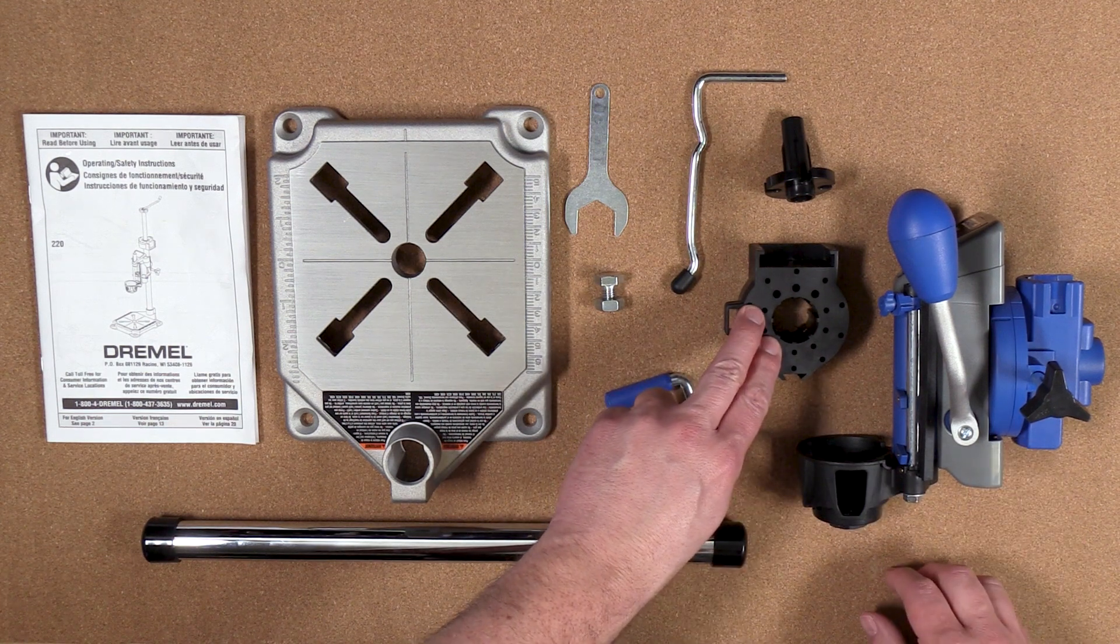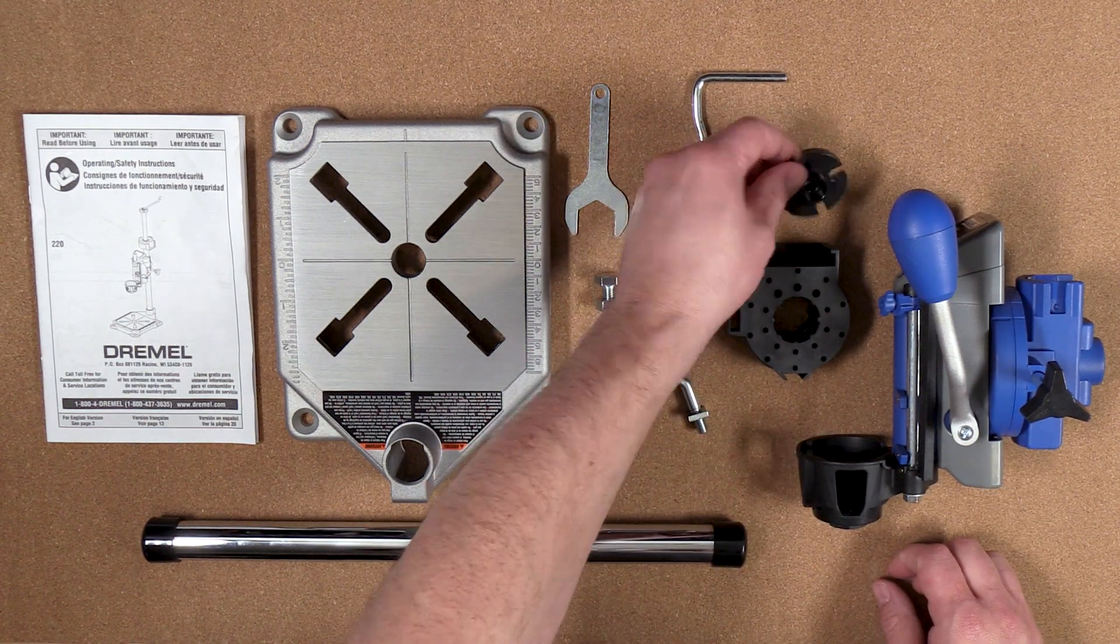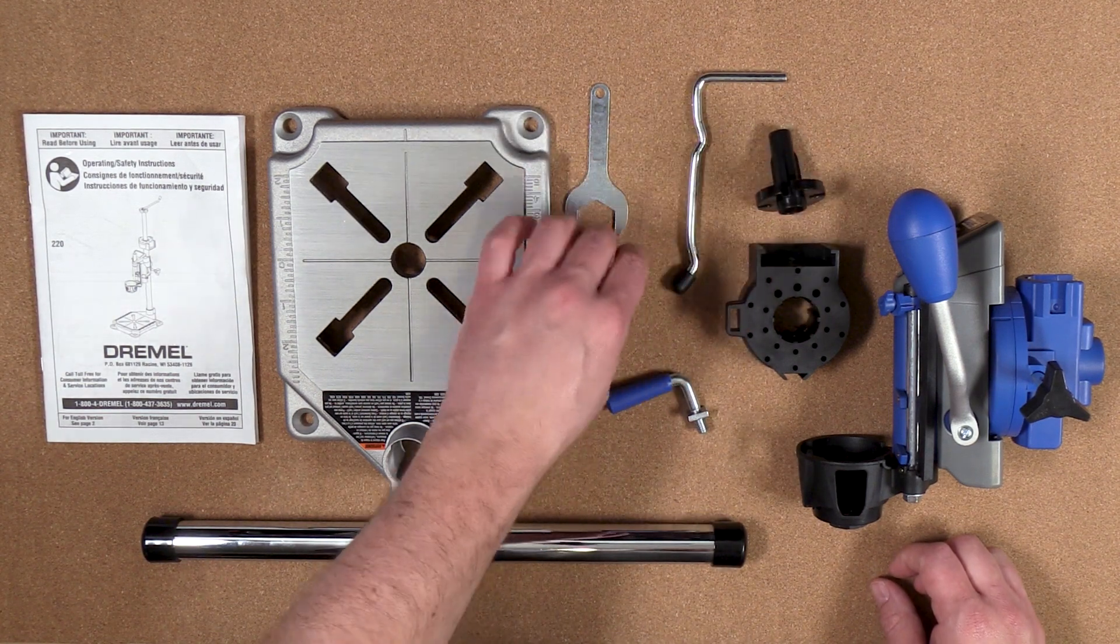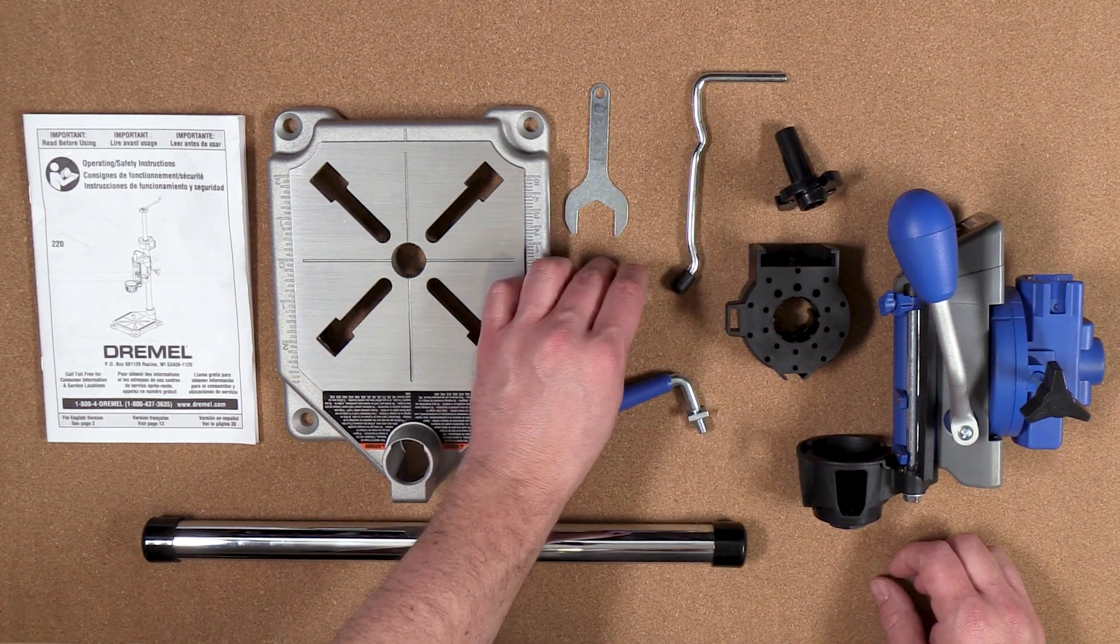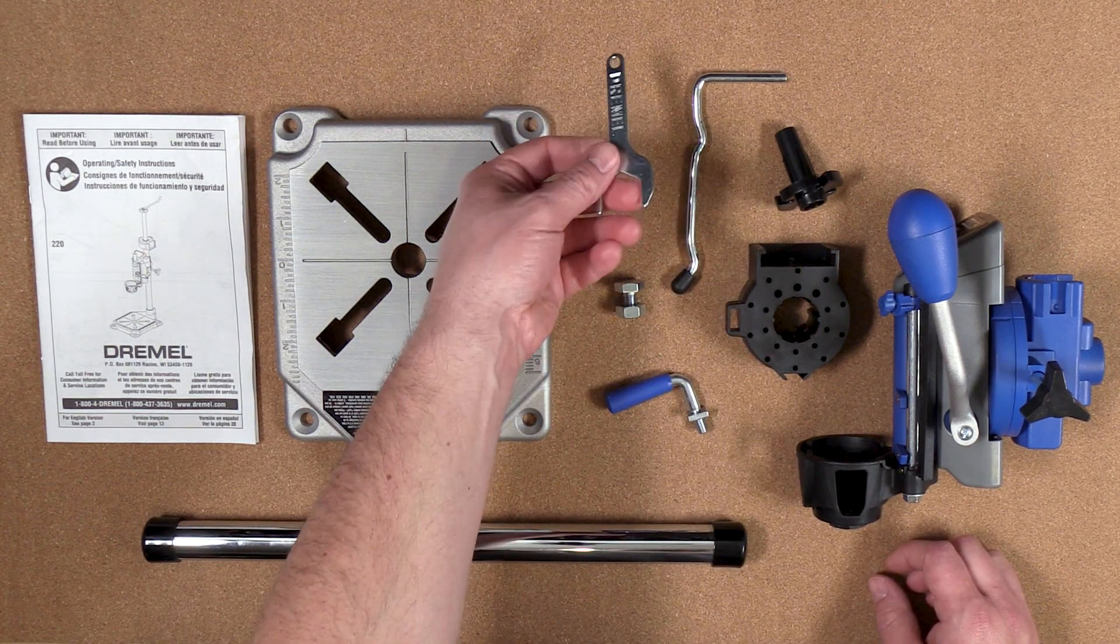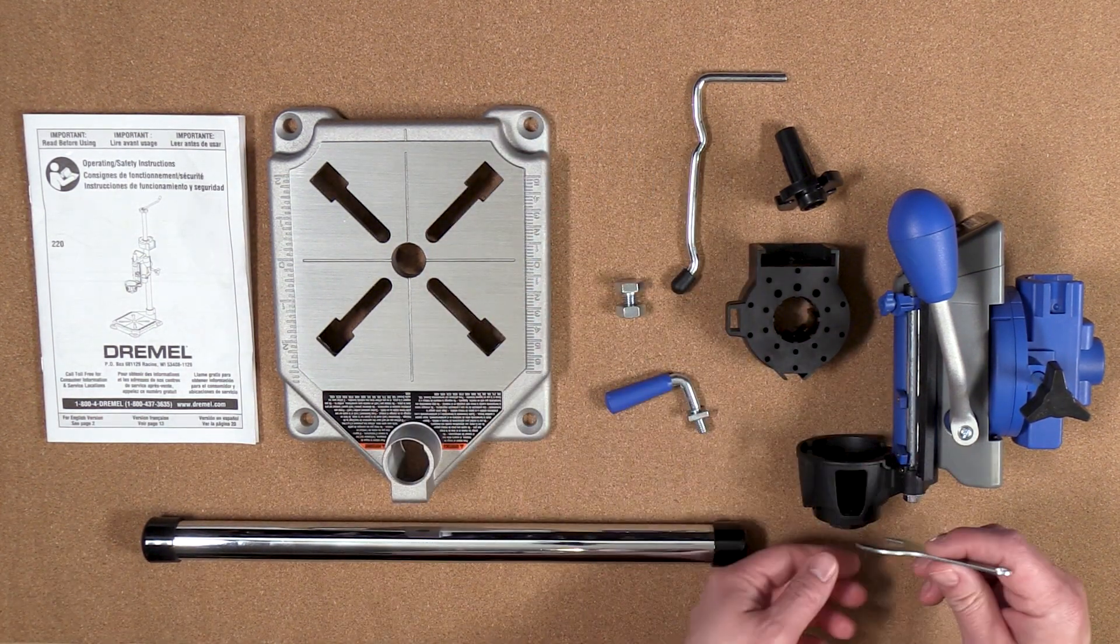Here you have a tool and bit mount. This is the rod holder that holds this rod which you can hang your tool and flex shaft with. This nut secures the stainless steel shaft to the base and you also get a wrench that will let you tighten your rotary tool to the mount.